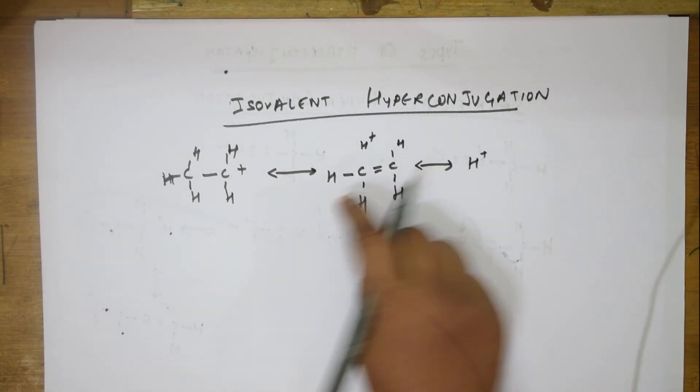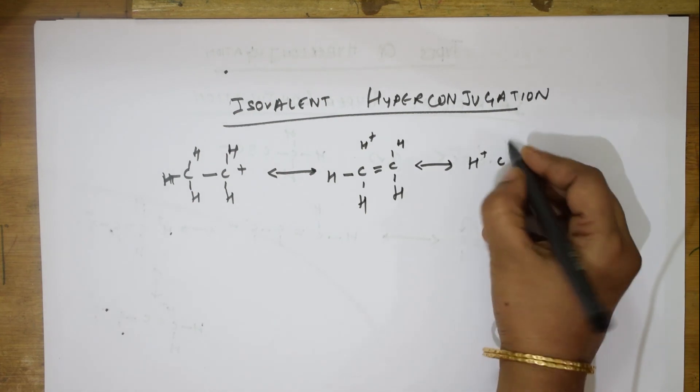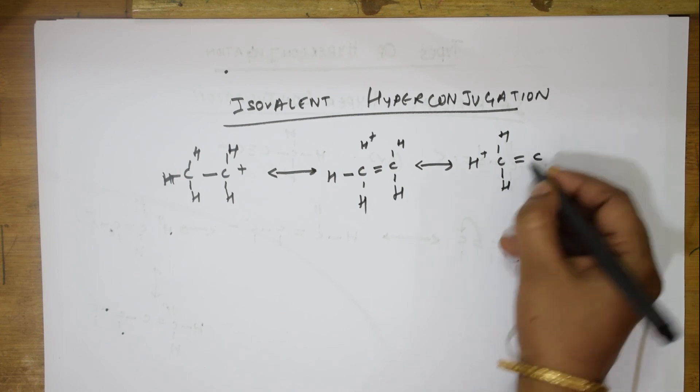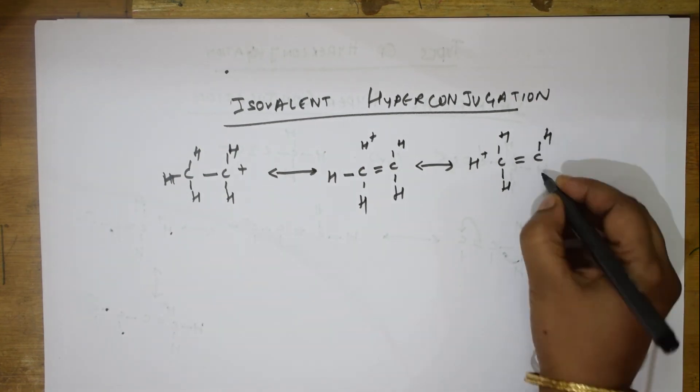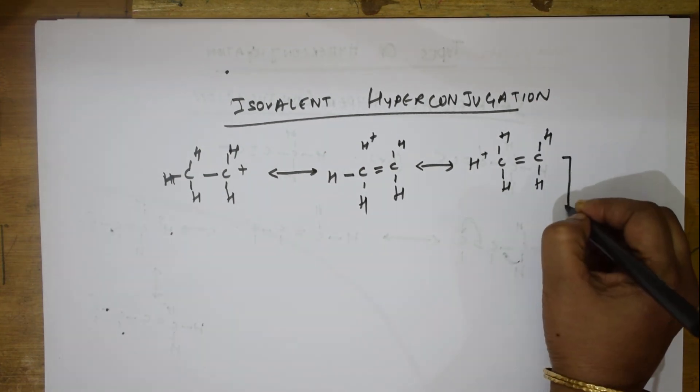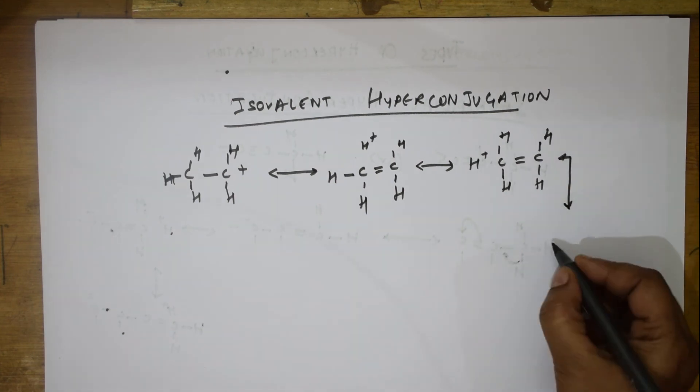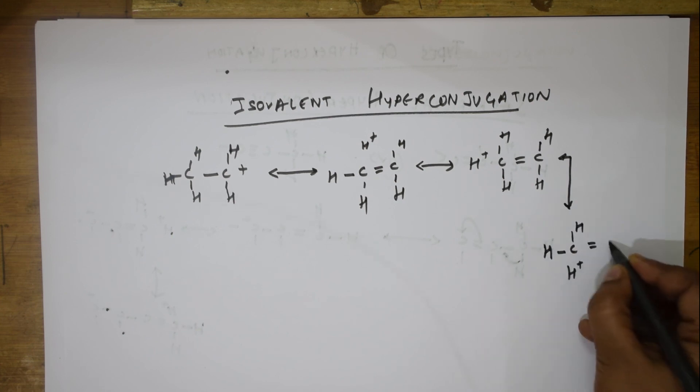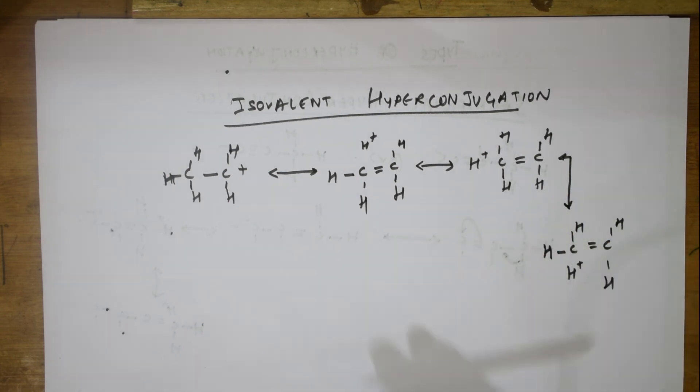This hydrogen, double bond, hydrogen, hydrogen. This is again H-carbon-hydrogen. This is H plus, double bond, H and H. This is isovalent hyperconjugation.